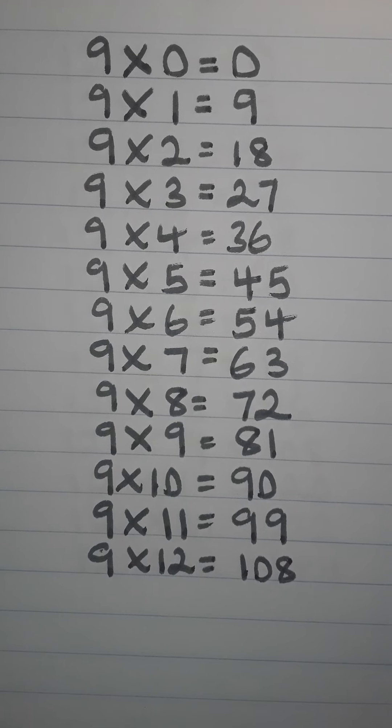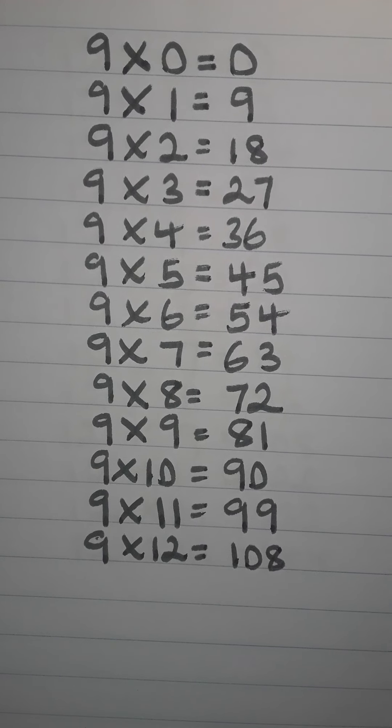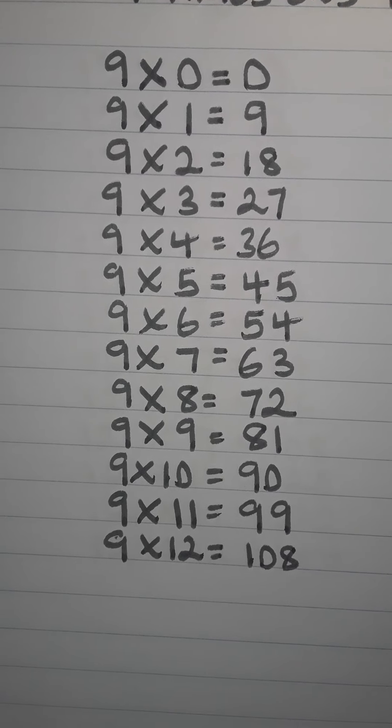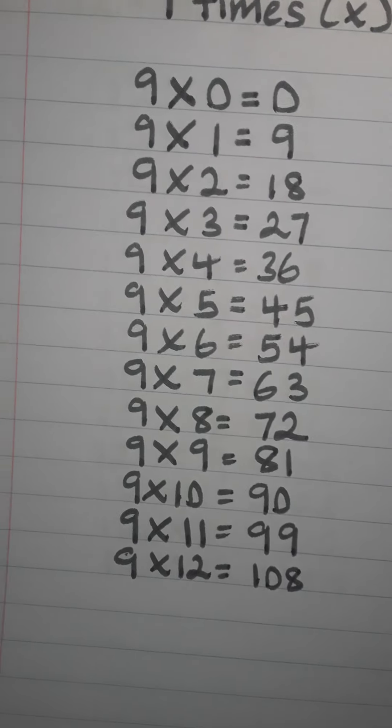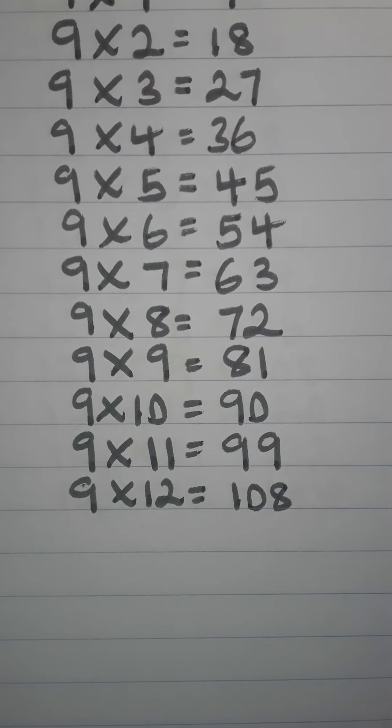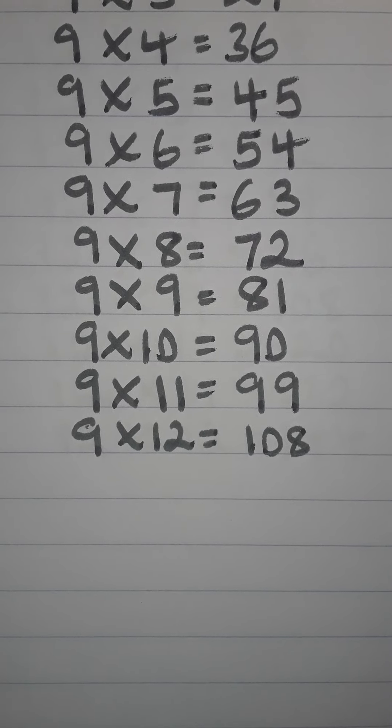9 times 0 is 0. 9 times 1 is 9. 9 times 2 is 18. 9 times 3 is 27. 9 times 4 is 36. 9 times 5 is 45.